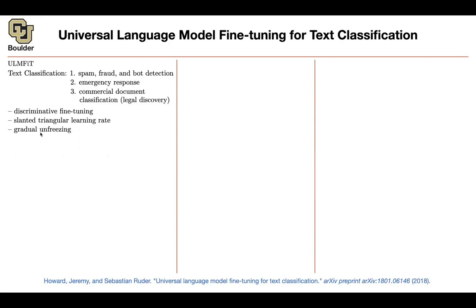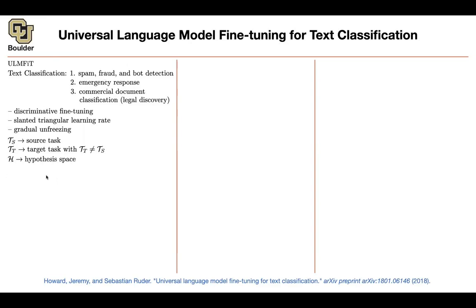The tricks are: discriminative fine-tuning, slanted triangular learning rate, and gradual unfreezing. We have a source task, which is your language model — given these three words, predict the next word. We have a target task, which is text classification. This is a different task from your source task, and you don't need to worry about this.